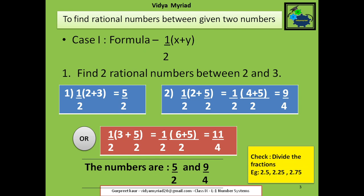Now in order to check my answer I will just divide the fractions and see. Some fractions will be easy — you can quickly check whether your answer is coming in between 2 and 3 or not. When I divide 5 upon 2, 9 upon 4, and 11 upon 4, all my fractions give an answer coming between 2 and 3, which means my answer is correct.